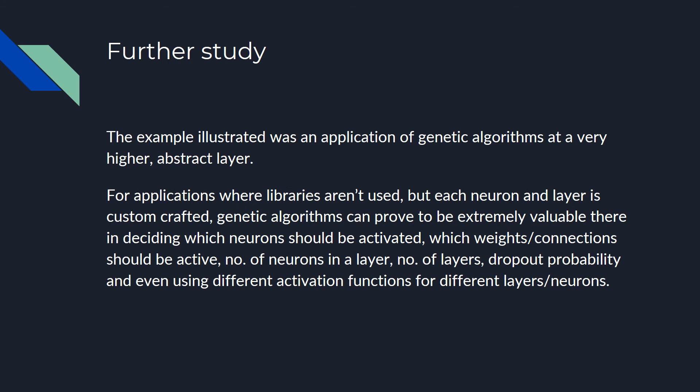The example illustrated was an application of genetic algorithms at a very high abstract layer. Usually in industry or research, you don't use high-level library APIs — you handcraft each neuron and each layer according to specifications. At that point, since you have a lot of parameters to tune, brute force is definitely not a good idea. Genetic algorithms play a major role here to decide the best values for those parameters — they can significantly decrease the time and give you far better accuracy.